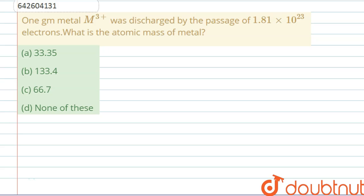Hello everyone, let's start this question. In this question we are given 1 gram of metal as M³⁺ was discharged by the passage of 1.81 × 10²³ electrons. We have to tell the atomic mass of the metal.